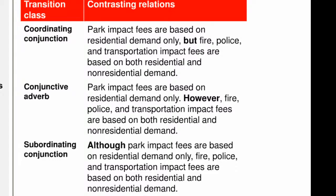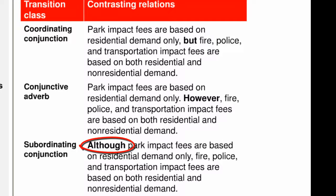Consider how the three classes of transitions might be used to signify the contrasting relation. The first possibility is using a coordinating conjunction like "but" between two independent clauses, combining them into one complex sentence. The second possibility is using a conjunctive adverb like "however," which appears before the subject slot in sentence-initial position, followed by a comma. The third possibility is using a subordinating conjunction like "although," which creates a subordinate clause, combining the two sentences into one and separating the subordinate clause with a comma.